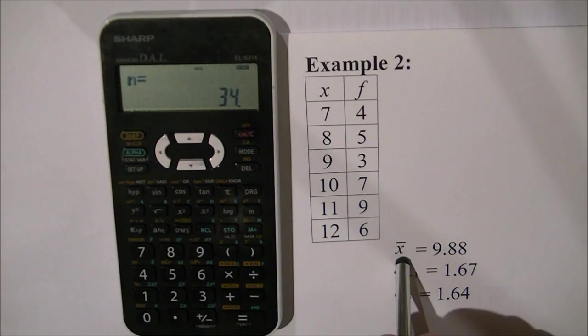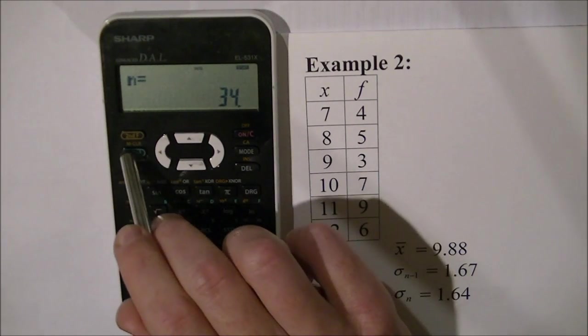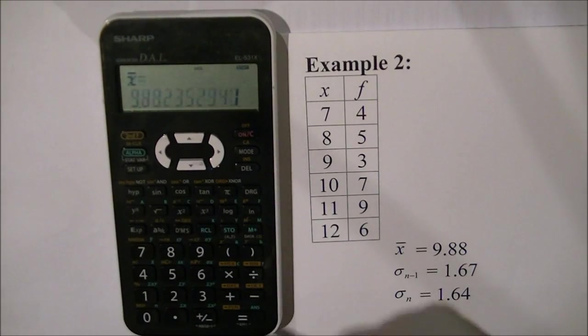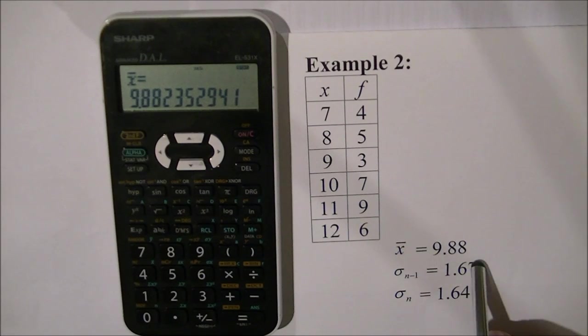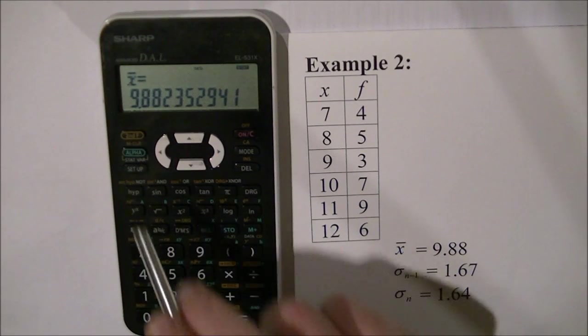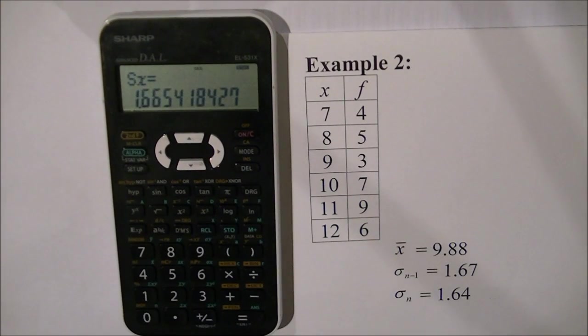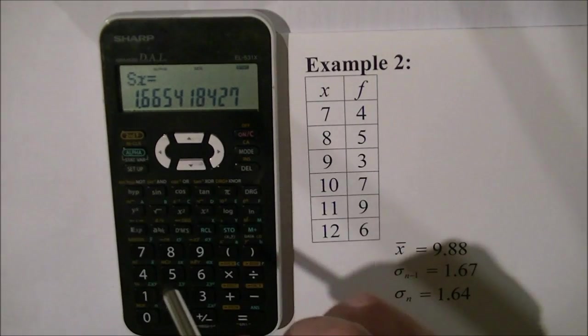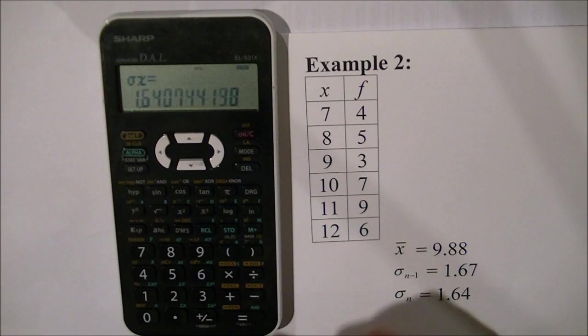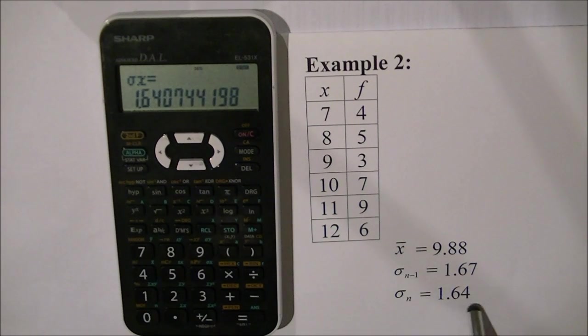I'm going to find the mean, the sample deviation, and the population deviation. To find the mean I press alpha 4 equals, which gives 9.88. The sample deviation I press alpha 5 equals, which is 1.67 rounded. And the population deviation alpha 6 equals, which is 1.64.